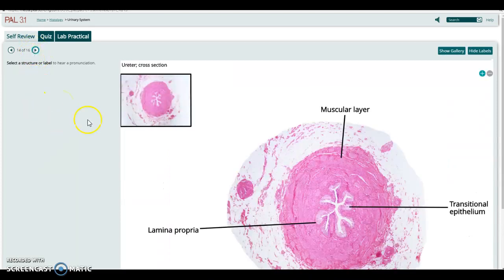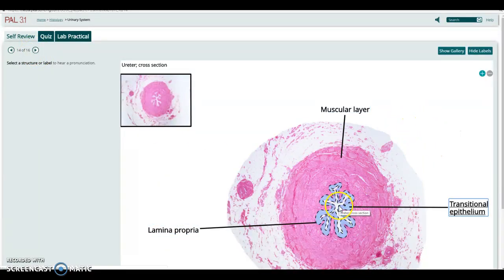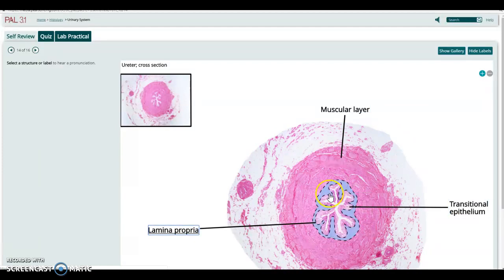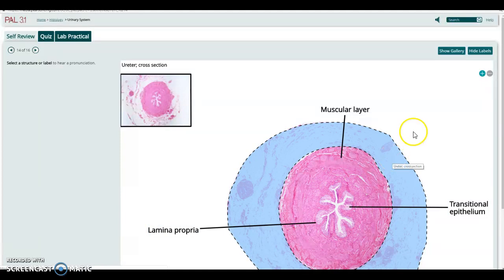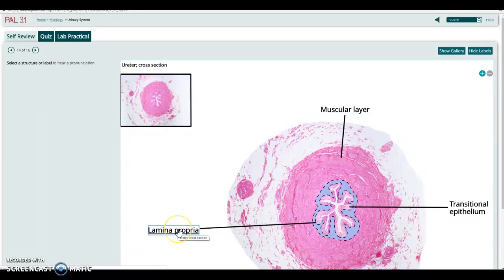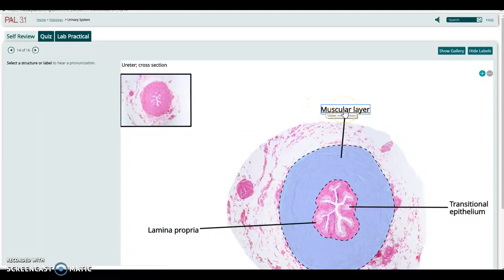This is now showing the ureter, which also has a transitional epithelium on its inner surface like that. So when the ureter is closed down, it forms that convoluted inner surface like that. And of course, you have a lamina propria around it, blood vessels and nerves, and the outer muscular layer.